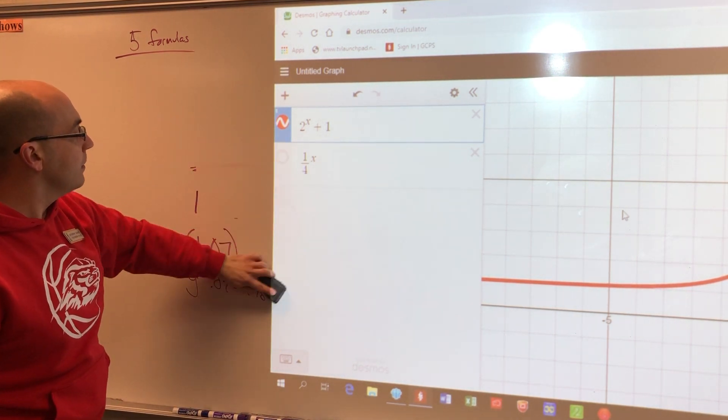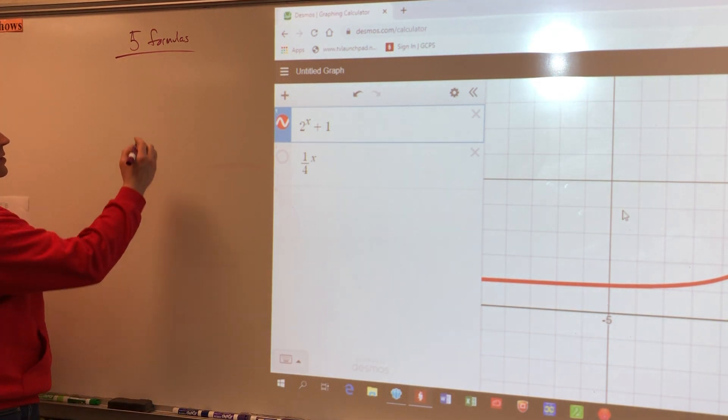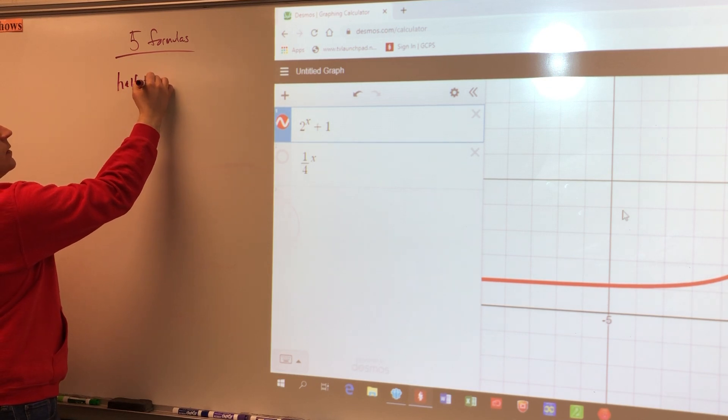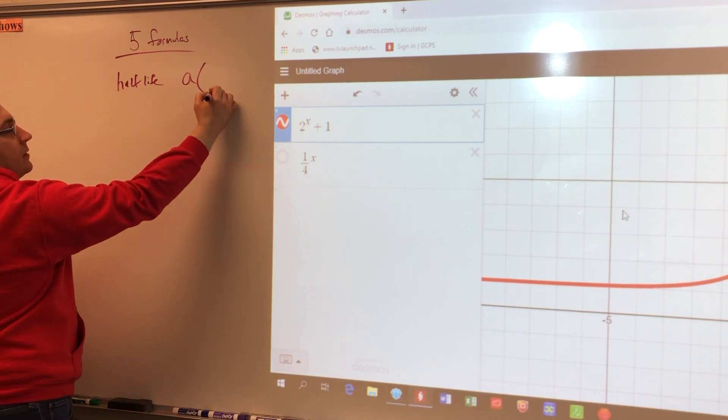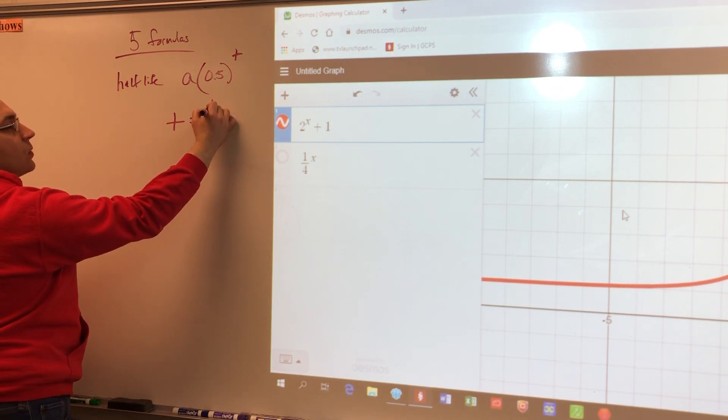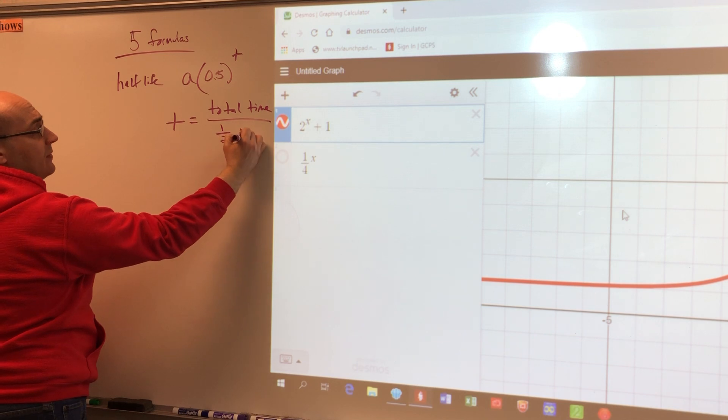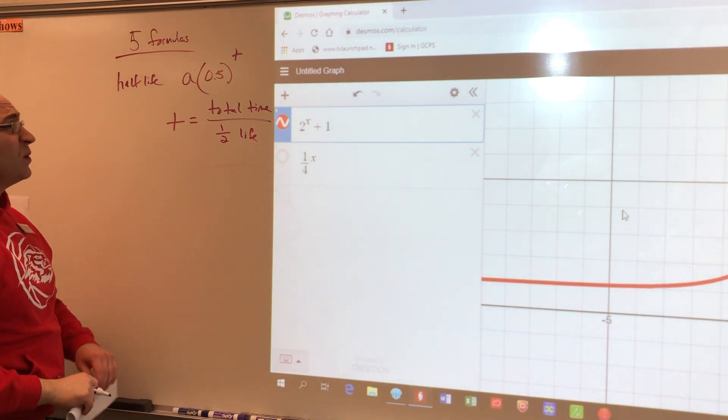Half-life. Remember that the fraction for the exponent means cycles. So half-life is A times 0.5 to the T over H power, where T represents total time and H is the actual half-life of the element. So just be aware of that.